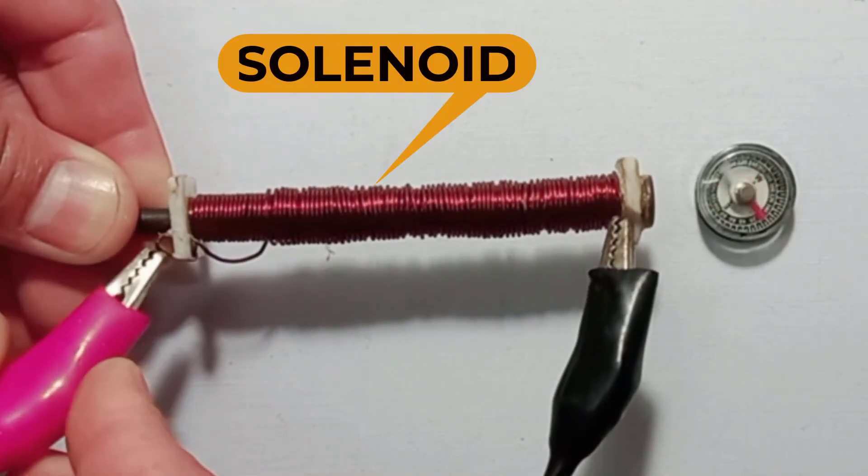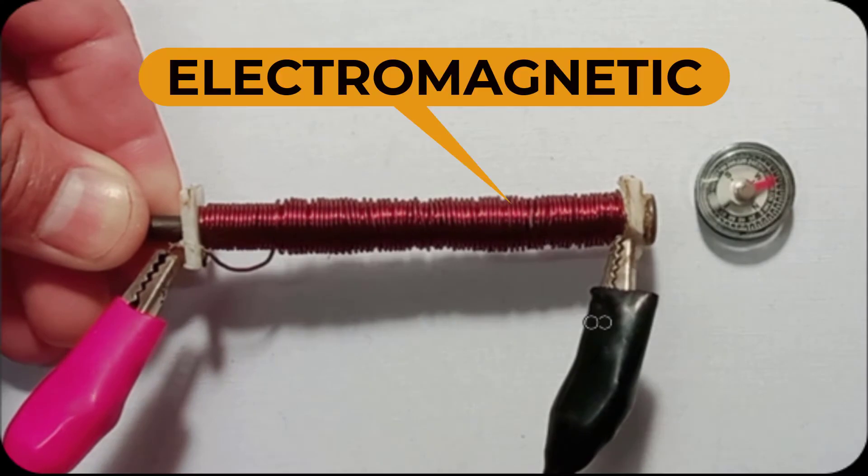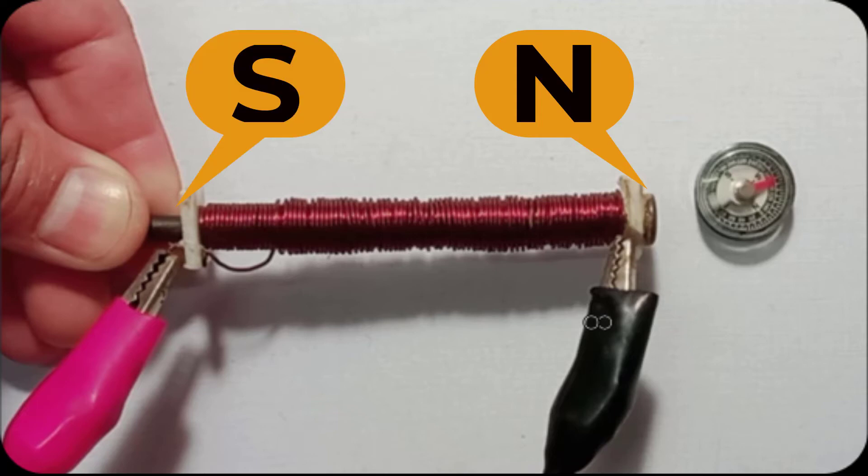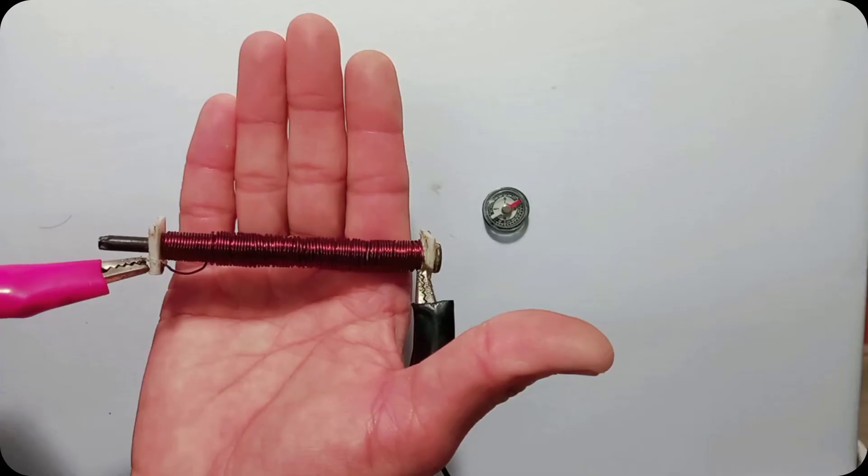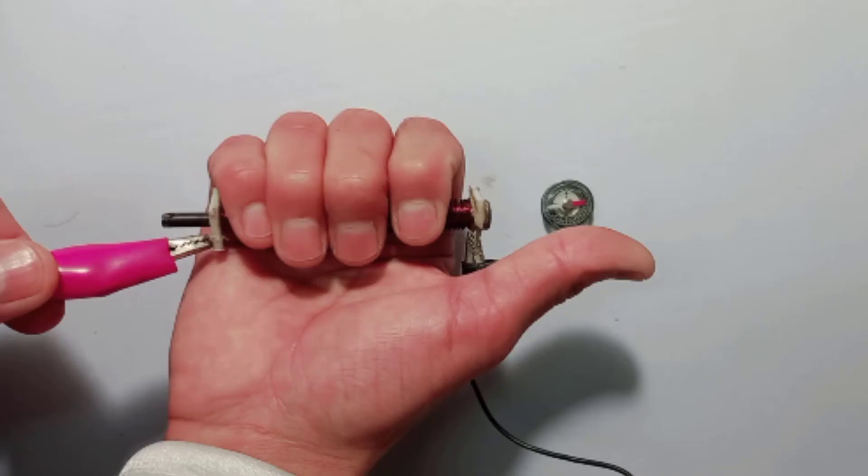Now we apply the right hand rule to a solenoid. A solenoid is an electromagnet with one side north pole and the other side south pole. To find the polarity of a solenoid, wrap the right hand around the solenoid so that the fingers point in the direction of the conventional current. The thumb will give you the direction of the north pole.